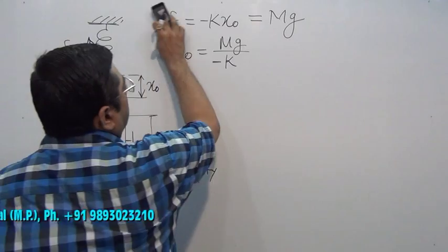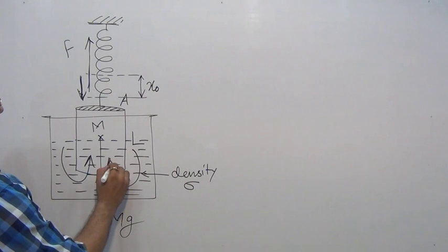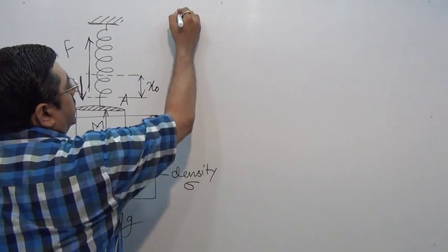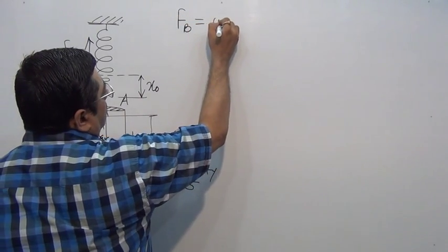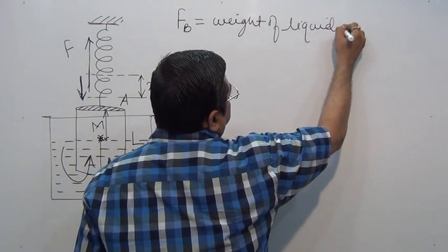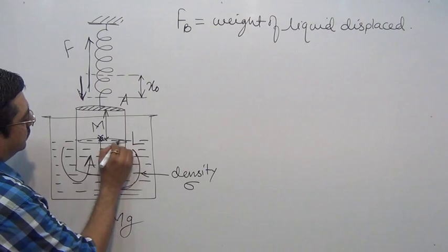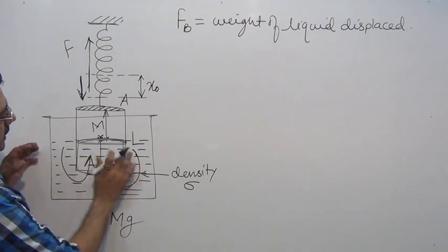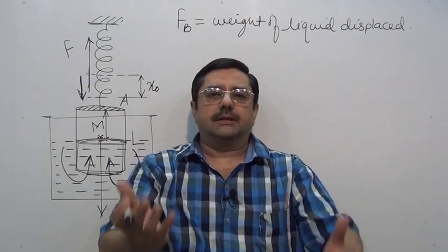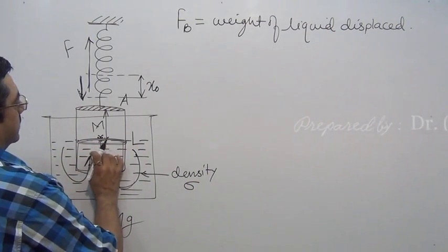But if it is immersed in the liquid, a force will act on it - buoyant force, utplawan. This force acts upward, and the magnitude of this buoyant force is equal to weight of liquid displaced. Weight of the liquid that is displaced by this cylinder will create an upward buoyant force. We have to calculate that force.